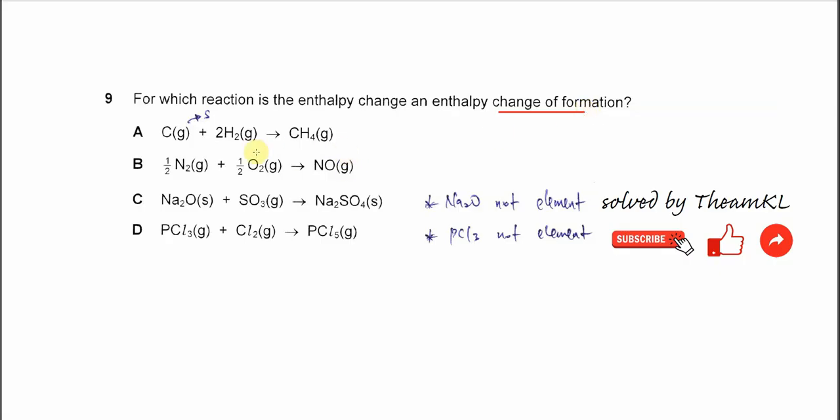For this answer, let's start from A. One mole of methane gas forms from its elements. The elements must be in standard state. Carbon and hydrogen are the elements to form methane, but the carbon now is in gas form. So the carbon must be in solid form, so A is wrong. The elements must be in their standard state.